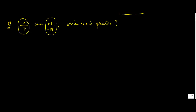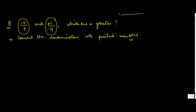Whenever you get these kinds of rational numbers, you have to follow certain steps. The first step is to convert the denominators into positive numbers. For minus 3 upon 7, the denominator is already positive, so nothing needs to be done. But for 1 upon minus 14, the denominator is negative. We multiply both numerator and denominator by minus 1 to convert it.